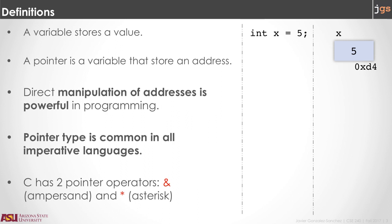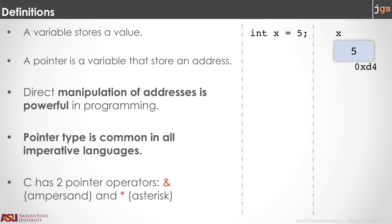A variable is a space in the memory that stores a value. So when you do something like int x equals 5, what you are doing is to give a name to a space in the memory — that name is x — but that space has an address. Every single space in the memory has an address. So we can imagine that this hexadecimal number is the address of this box. So a variable has an address and also has a name.